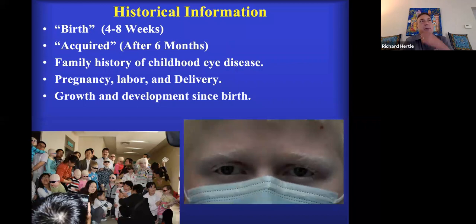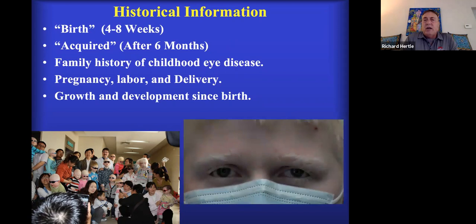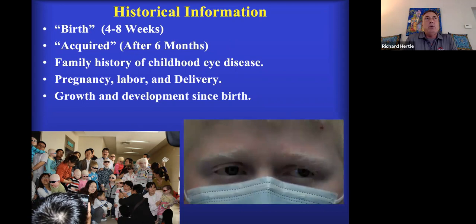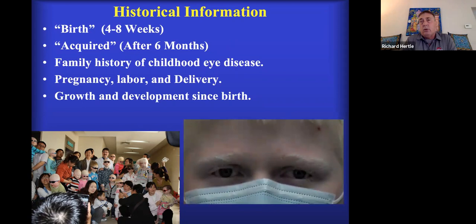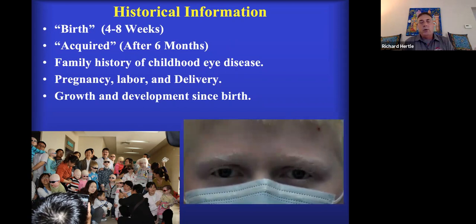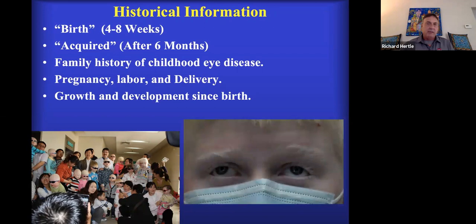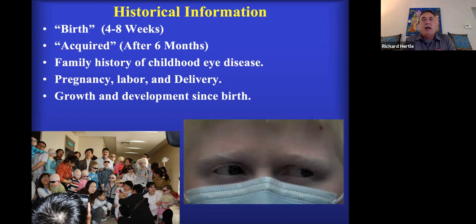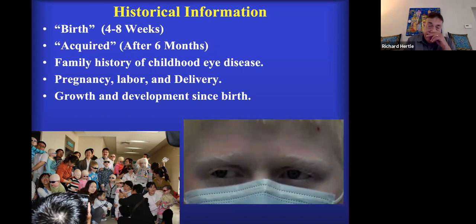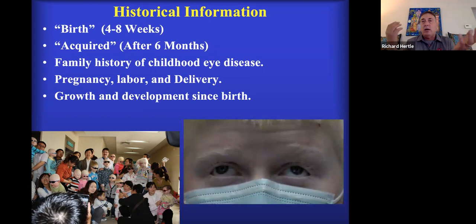Those three types are infantile nystagmus syndrome, spasmus nutans, and fusion maldevelopment. When your child or you are examined by an eye care professional for nystagmus, one important characteristic is asking about the development of the oscillation. This is not congenital. When parents are given their beautiful baby at birth, the eyes are not wiggling. The eyes are not wiggling during the first feeding either — parents don't report any nystagmus.